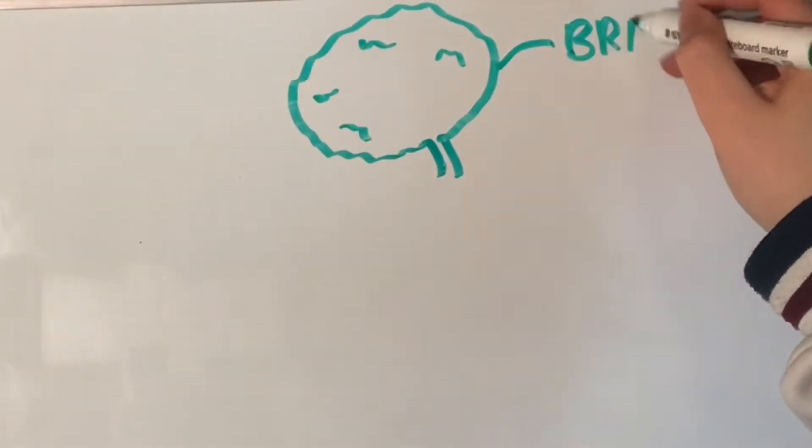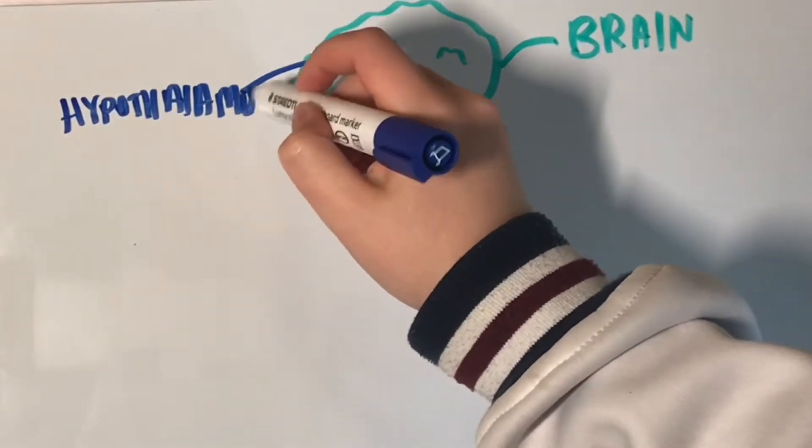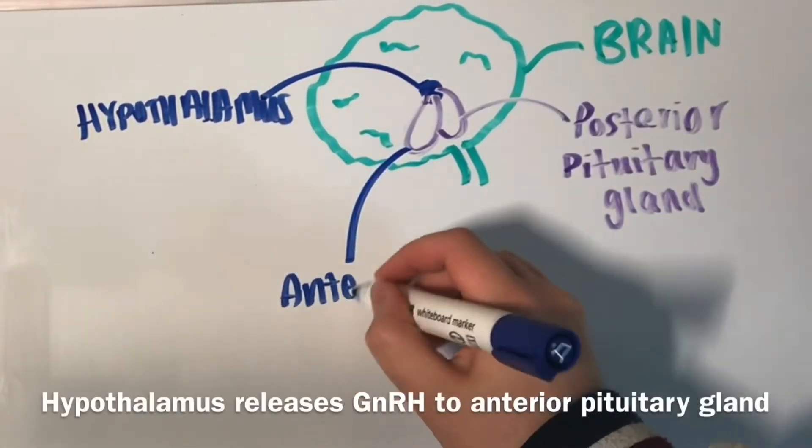Menstruation and pregnancy. The process begins at the brain. The hypothalamus will release gonadotropin-releasing hormone which travels to the anterior pituitary gland.